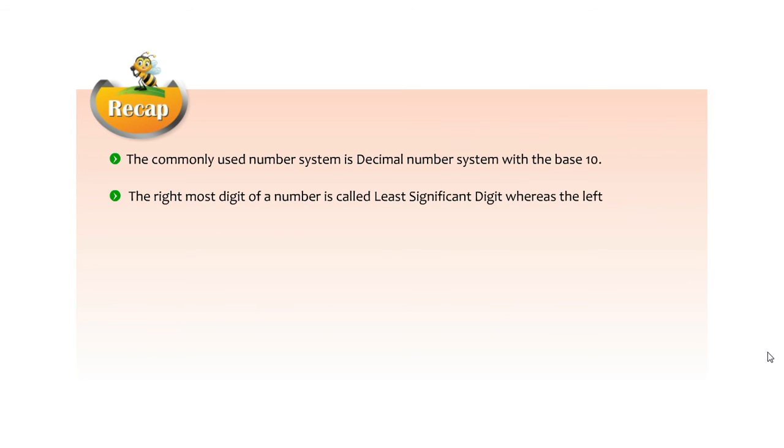Let us quickly glance through the key points discussed in this chapter. The commonly used number system is decimal number system with base 10. The rightmost digit of a number is called least significant digit, whereas the leftmost digit is called most significant digit. The decimal number system consists of 10 digits from 0 to 9 and has base 10.